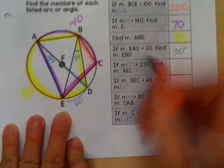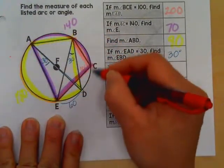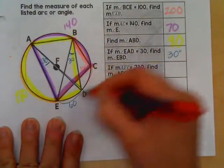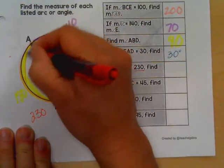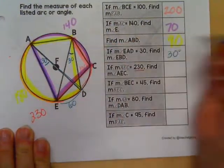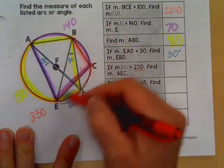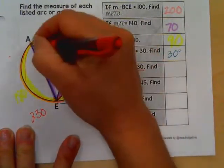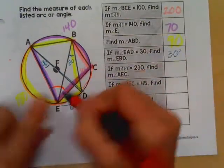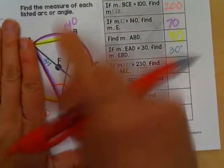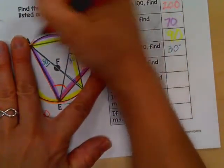The measure of arc AEC. A, E, C. This whole arc back here, most of that circle is 230, which we know, because that's more than half a circle, so it's pretty big. Find the measure of angle AEC. A, E, C. So they want us to find this angle right here. Well, this angle intersects the arc that we already knew here was 140.